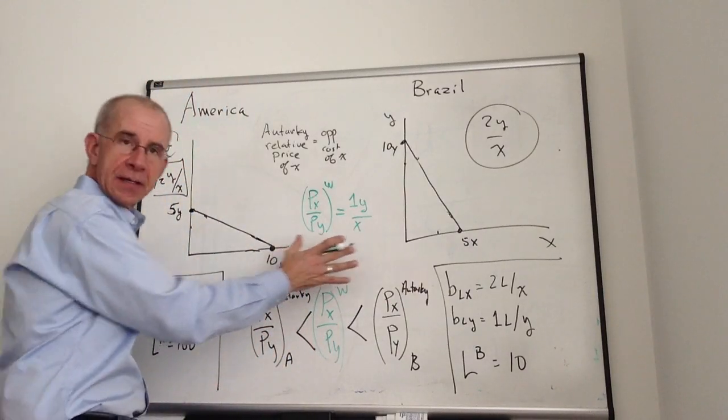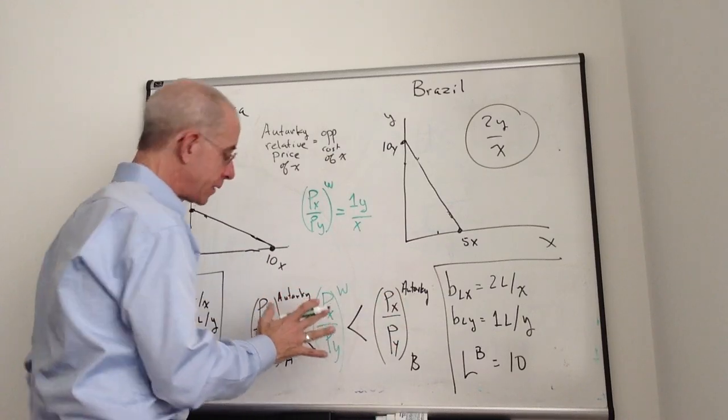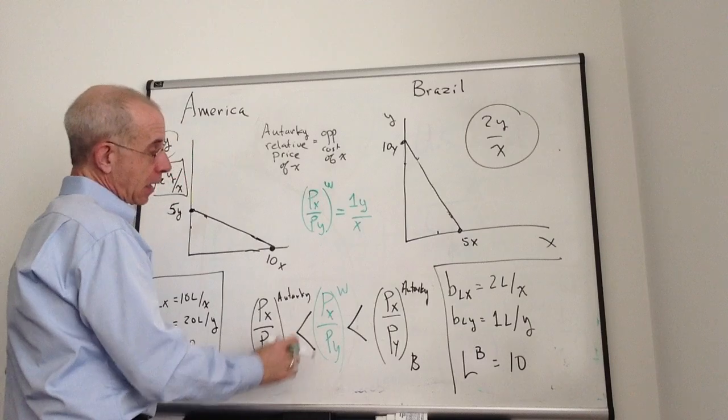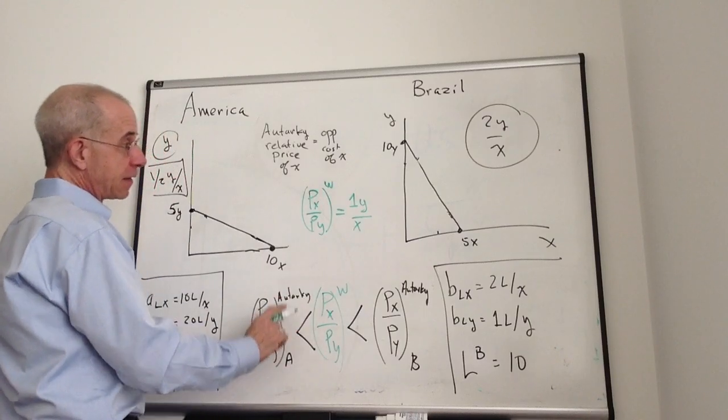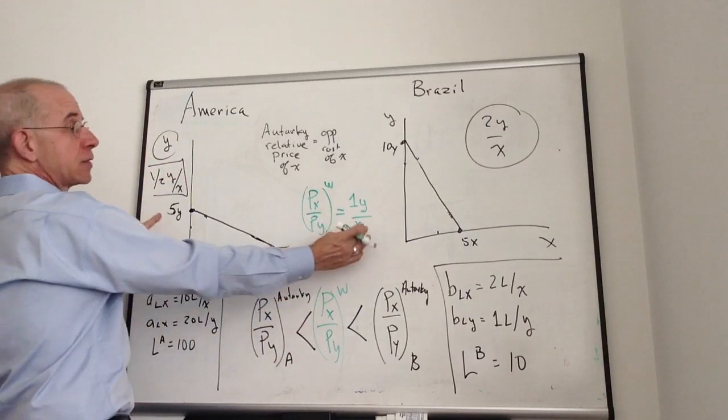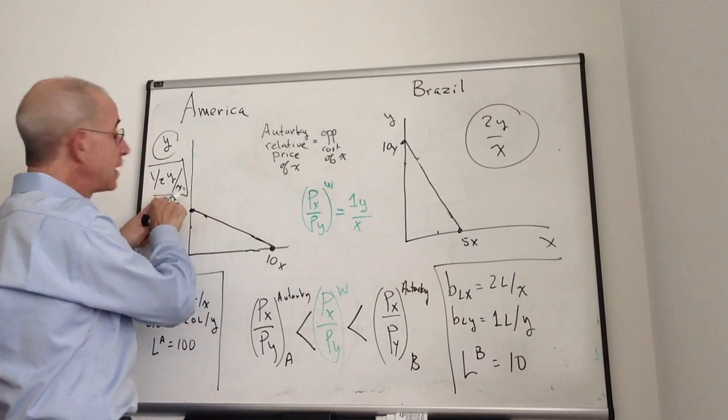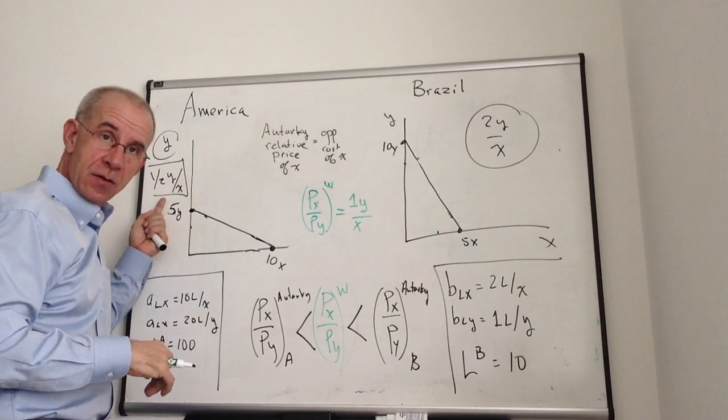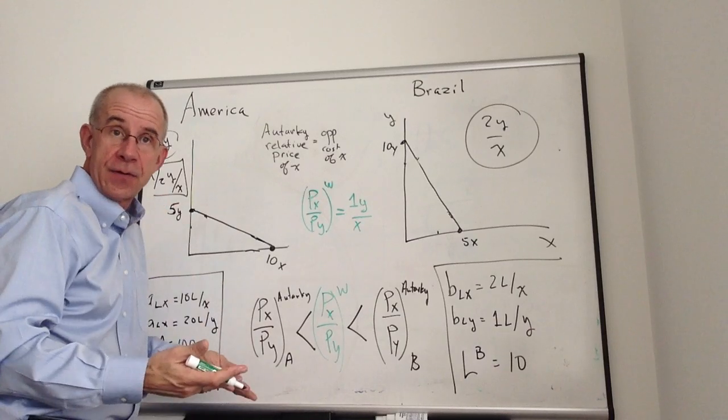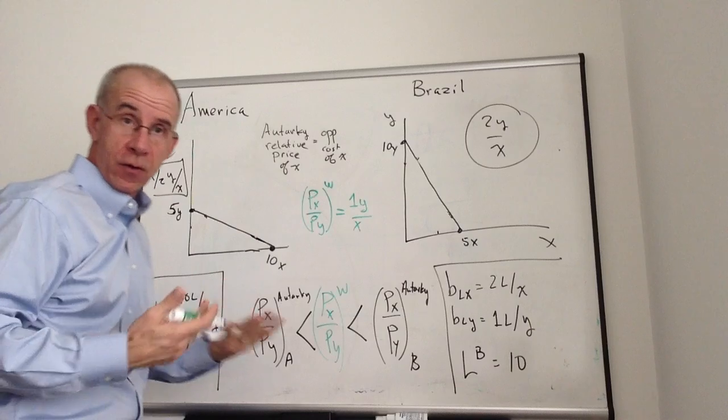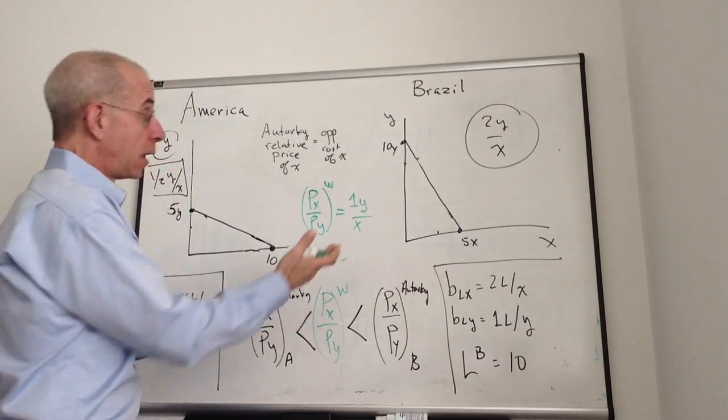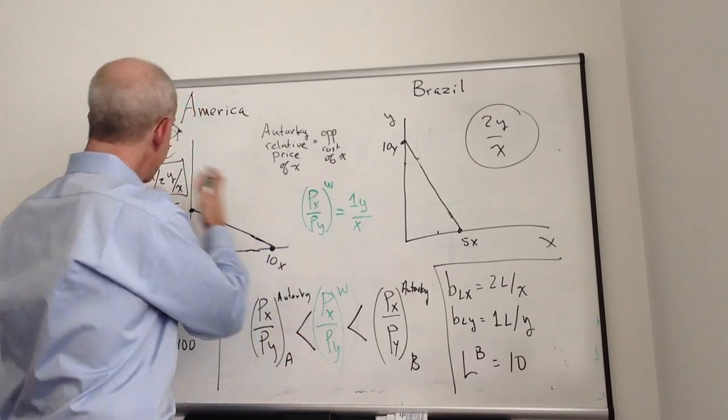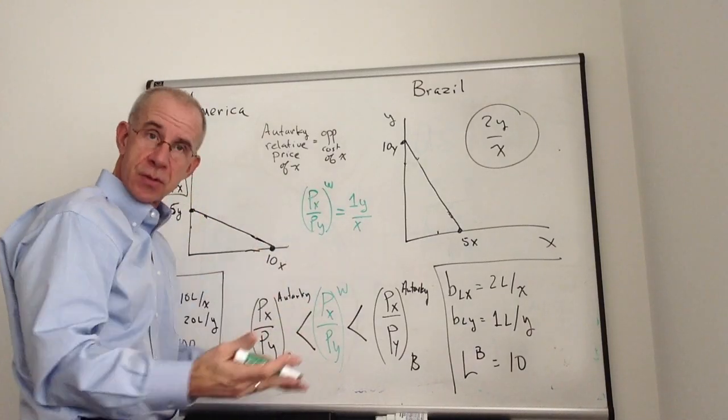So let's take a look at what the incentives are for the two countries. For country A, they're going to see that the world price for X, one Y for every X, exceeds the price internally. Internally, if they sell a unit of X, they get enough money to buy one-half the unit of Y. So a firm producing X would say, hey look, I can earn twice as much money abroad than I can at home. I should produce more X.